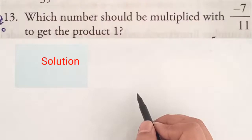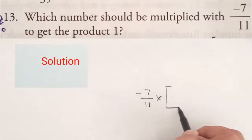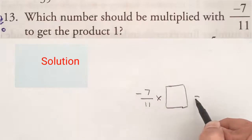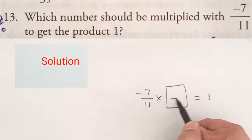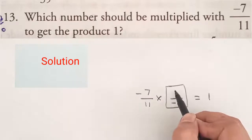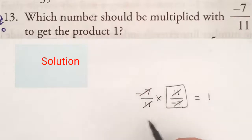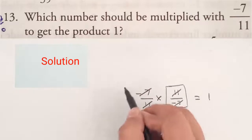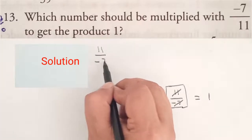Question 13: Which number should be multiplied with minus 7 by 11 to get the product 1? Suppose the unknown number is x. So minus 7 by 11 into x equals 1. The number must be the multiplicative inverse, so x equals minus 11 by 7. Therefore, the answer is 11 by minus 7.